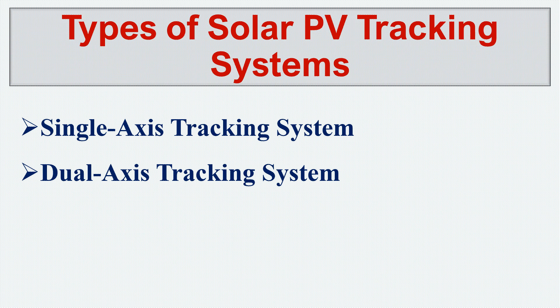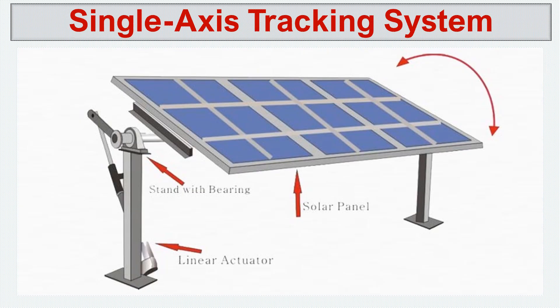There are two types of solar PV tracking systems: single axis tracking and dual axis tracking. Single axis tracking systems can be seen in many places. Recently I visited a one-megawatt solar farm that had a single axis tracking system. The panel is installed between two poles with a pipe in the center as the axis, and it is rotated by a mechanism.